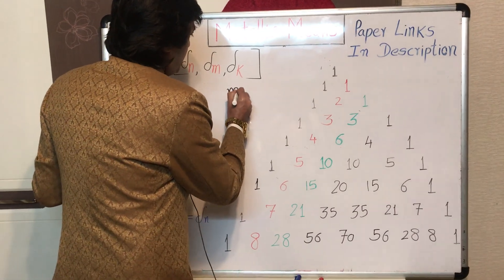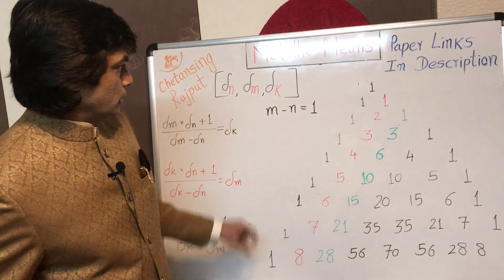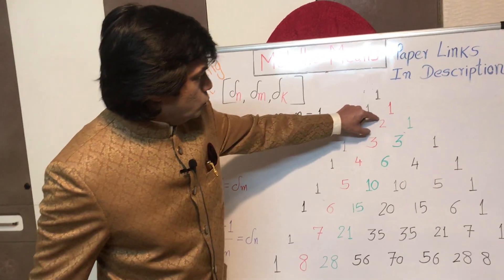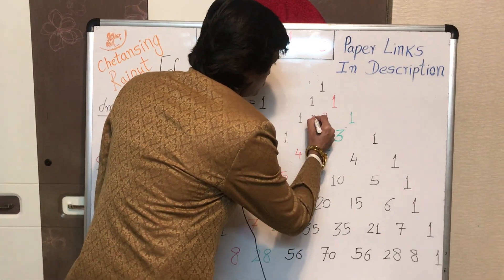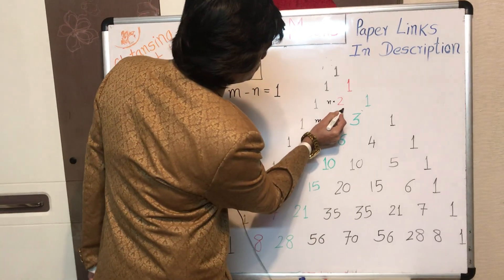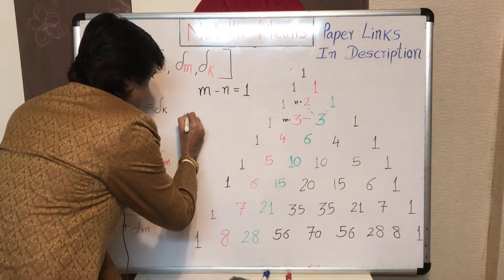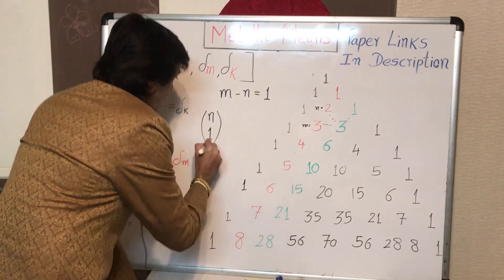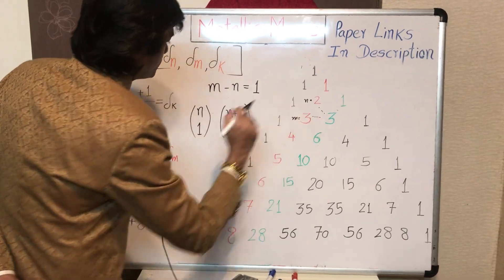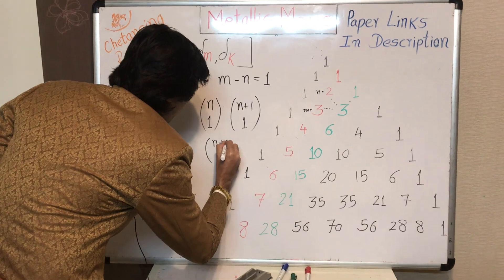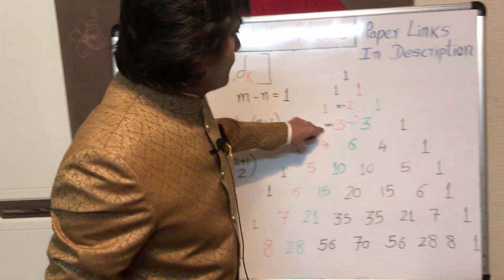Let me elaborate. Consider N and M as two consecutive integers on the red diagonal — the natural number diagonal — so M minus N equals 1, like 2 and 3, or 3 and 4, or 4 and 5, and so on. Suppose N equals 2 and M equals 3. Then consider the integer on the triangular number diagonal between them — this 3 here. Let us call them simply N, M, and X.